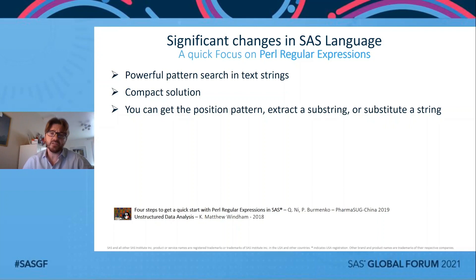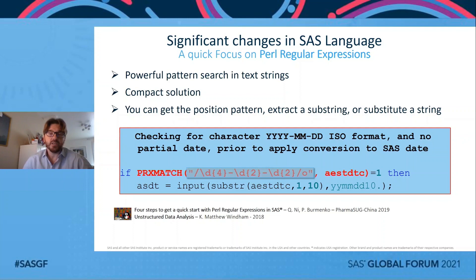Perl regular expressions were also added in SAS 9, although very similar SAS regular expressions were available in earlier versions. This is a very powerful technique for advanced string pattern search and unstructured data analysis. Many of these string processing tasks can be performed with traditional character functions, but Perl regular expressions provide a more compact solution. For example, you could write a regular expression to look for four digits, a dash, two digits, a dash, followed by two digits, to check if a date variable in an SDTM dataset is a complete date in ISO format before converting it to a SAS date.